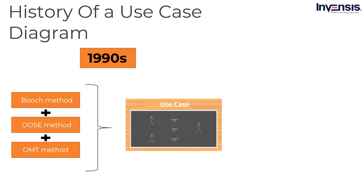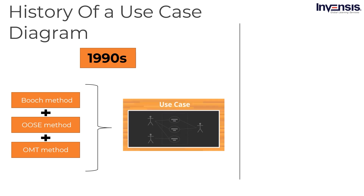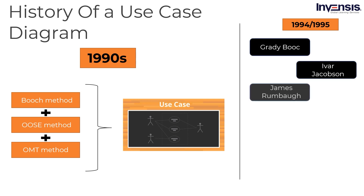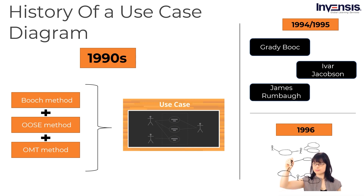In 1996, the Object Management Group asked IBM, Microsoft, and Oracle to create a modeling language. Then software engineers Grady Booch, Ivar Jacobson, and James Rumbaugh of Rational Software invented UML during 1994 and 1995. It was under development until 1996. Later, their combined efforts produced UML 1.0, which quickly gained a standard and was gradually updated.